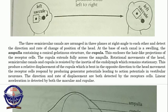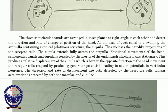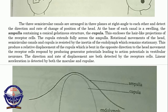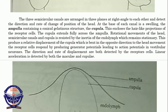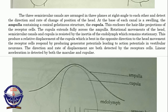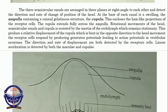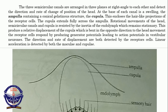Now let's look at how the semicircular canals are involved in the sensation and balance of the body. The three semicircular canals are arranged in three planes at right angles to each other and detect the direction and rate of change of position of the head.